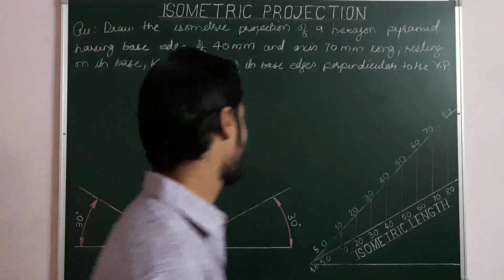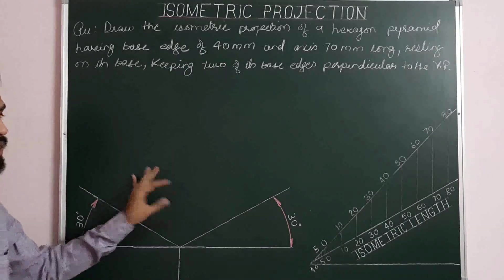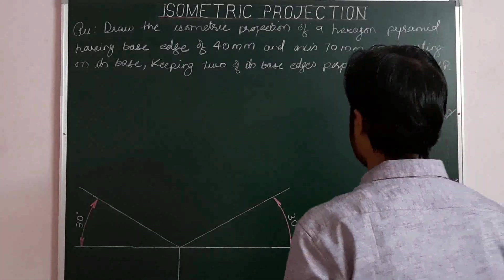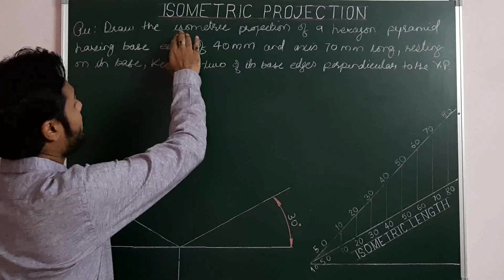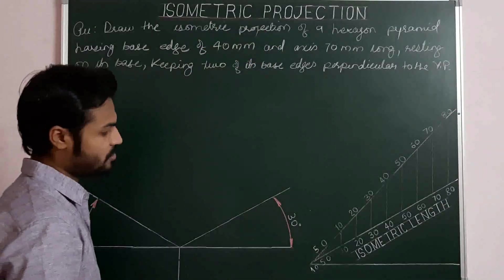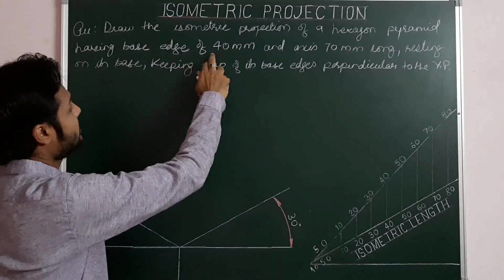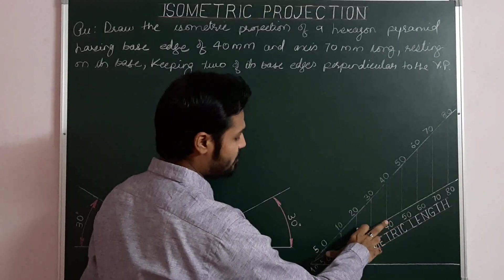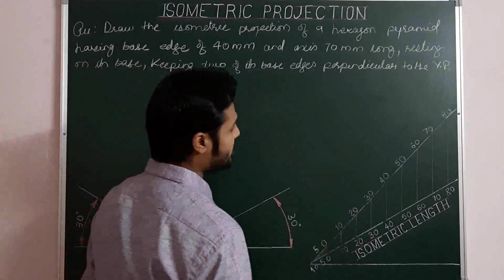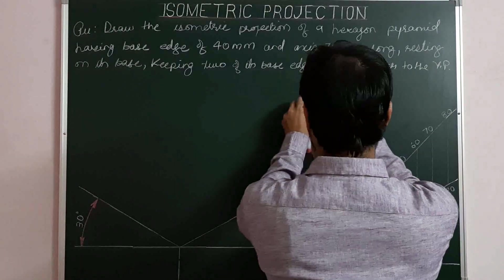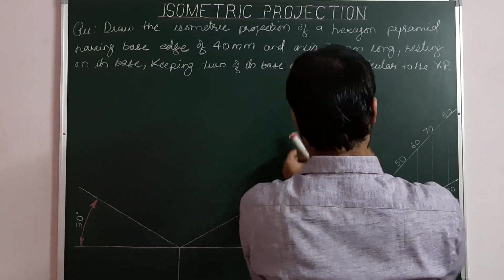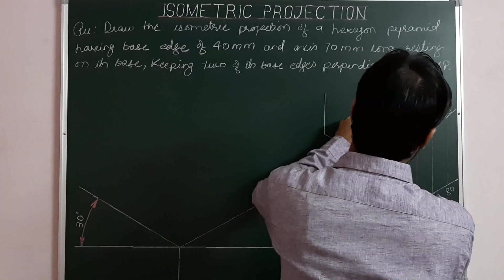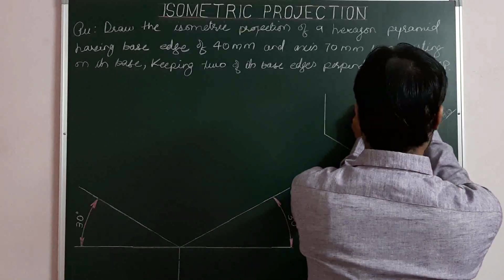For construction work, we have to draw the helping figure of the base, which is a hexagon inside a box. So we will draw a hexagon. Again, we are drawing isometric projection, so we have to use isometric length only. The given base edge is 40 mm, so we will take iso-40 for the construction of the helping figure. By taking iso-40, we will draw a regular hexagon, so the helping figure is a regular hexagon with side length equal to iso-40.